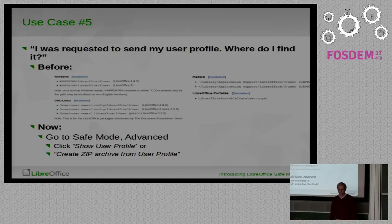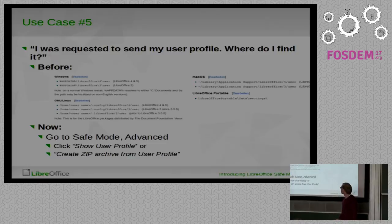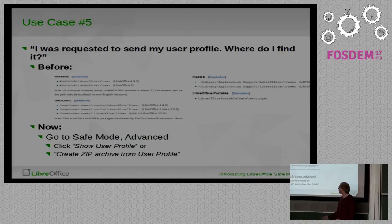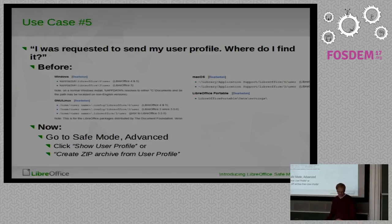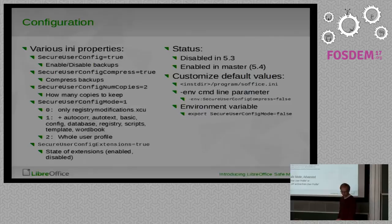Another use case: I was requested to send my user profile to a bug tracker or support system. Where do I find it? Before, we had a wiki page with instructions — on Windows it is in AppData/LibreOffice/user, on Linux it is in the home directory under .config/LibreOffice/user, etc. Now you can find that folder by going to Safe Mode. There is an advanced section where you can click a button to show the user profile folder or directly create a zip file out of it.